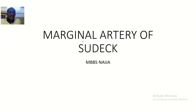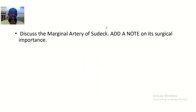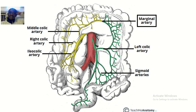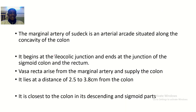We're talking about a rare structure — the Marginal Artery of Sudeck. This guy has another name, but this very name is a rare one. The question here is: discuss the Marginal Artery of Sudeck and other notes on its surgical importance. The Marginal Artery of Sudeck is also called simply the Marginal Artery, and it is around the curvature — the colonic curvature.